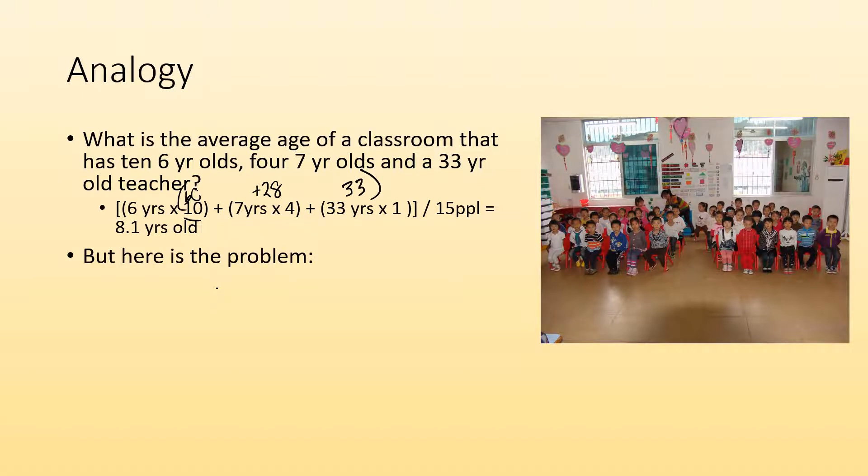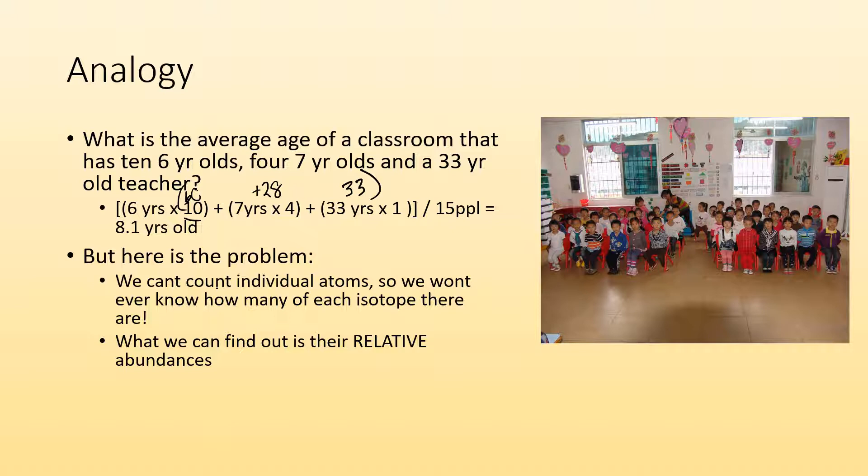But here's the problem when it comes to atoms. We can't count individual atoms. There's no way to just separate them and start counting how many there are. But what we can do is we can find out their relative abundance, like of the whole sample, what percent is N-14, what percent is N-15. We can figure that out. So how are we going to work with percentages?